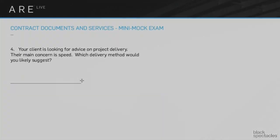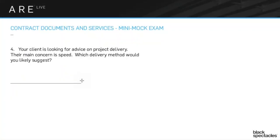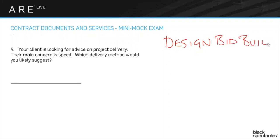Number four: your client is looking for advice on a project delivery, and their main concern is speed — the schedule. Which delivery method would you likely suggest? The obvious set of choices would be the standard, which is design-bid-build. That's where you as the architect get hired to design something, eventually the project is bid out to a number of different contractors, a contractor is chosen, and then they build it.